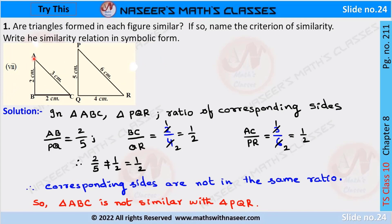We check whether triangle ABC is similar to triangle PQR. Corresponding sides are given, so we check the ratios. AB by PQ is written as 2 by 5. BC by QR is written as 2 by 4, which after cancellation gives 1 by 2. AC by PR is written as 3 by 6, which gives 1 by 2. Here 2 by 5 is not equal to 1 by 2, so the three corresponding side ratios are not the same. Therefore triangle ABC is not similar to triangle PQR.